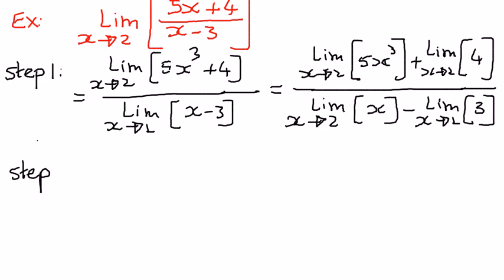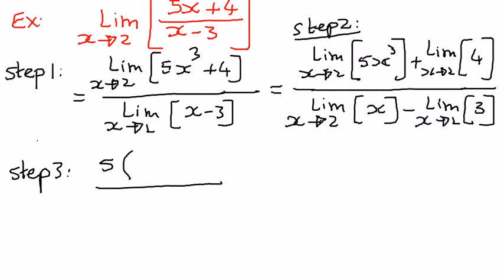Now we are ready to simplify all of that. We'll call this step 2 and this one step 3. In step 3, we're going to simplify all of that by substituting the values of x as x approaches 2. In the numerator, we have a constant number 5, and the value we want to substitute for x is 2, so 2³ is what we have, plus the limit of the constant number 4 as x approaches 2, which remains as 4. In the denominator, the limit of x as x approaches 2 gives us 2, minus the constant 3.